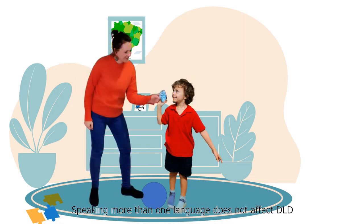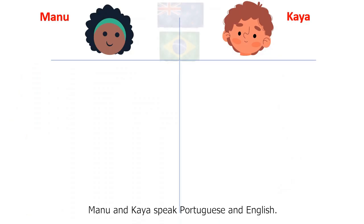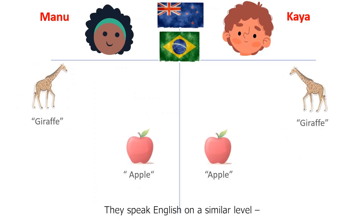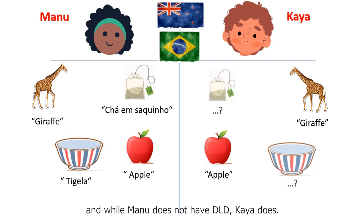Speaking more than one language does not affect DLD, but makes it difficult to identify. Manu and Kaya speak Portuguese and English. They speak English on a similar level, and while Manu does not have DLD, Kaya does.